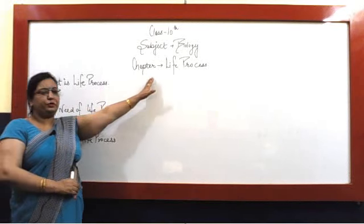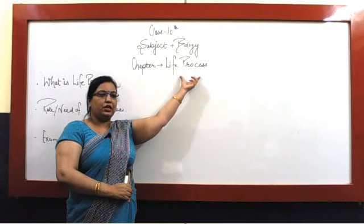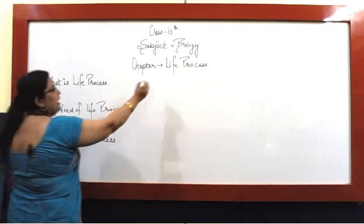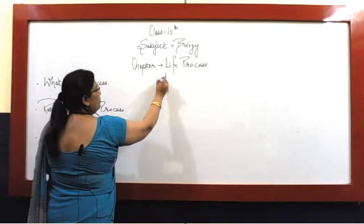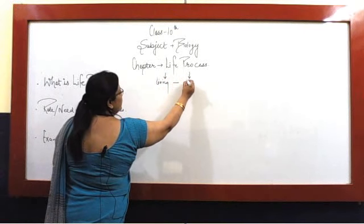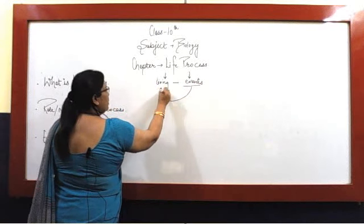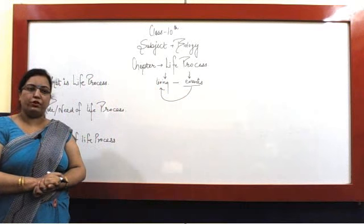Before starting the chapter, I will be clearing you the word meaning of life process. Life process kya hota hai? The word life means living. Process means events. Those events which make an organism living is said to be life process.